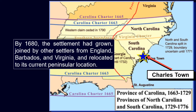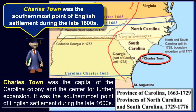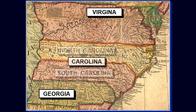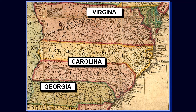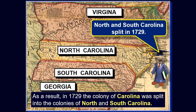By 1680, the settlement had grown, joined by other settlers from England, Barbados, and Virginia, and relocated to its current peninsular location. Charlestown was the capital of the Carolina Colony and the center for further expansion, and the southernmost point of English settlement during the late 1600s. The large area of the Colony of Carolina and the lack of good transportation made unified governance very difficult. As a result, in 1729 the colony of Carolina was split into the colonies of North and South Carolina.